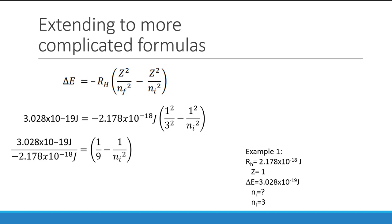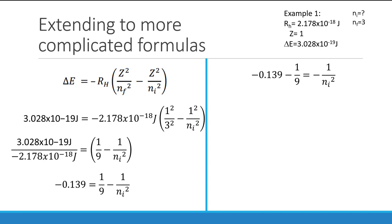First, let's simplify all of our exponents and then divide the negative 2.178 over. From here we can either solve the 1 over 9 or subtract it over as is. I'm actually going to subtract it over, leaving it as a fraction just to show you how that works. Now we can solve for the value on the left and we have our value on the right. Notice that there is a negative on both sides, so we would think about doing this as multiplying a negative 1 on both sides to get rid of the negative, leaving us with 0.25 equals 1 over ni squared. And now we're back to that same problem.